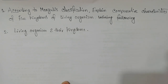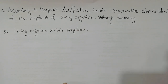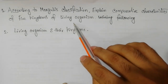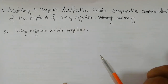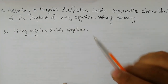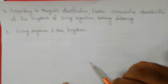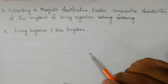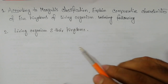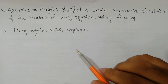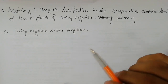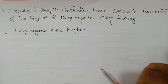The first question is: according to Margulis classification, explain the comparative characteristics of five kingdoms of living organisms. The second question is about living organisms and their kingdoms, with examples of living organisms provided.